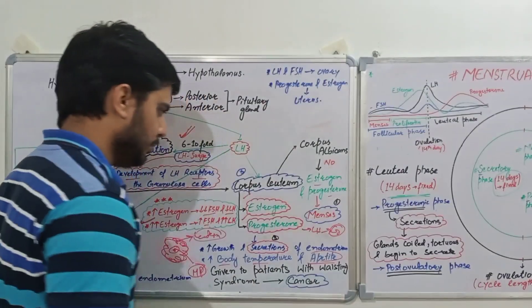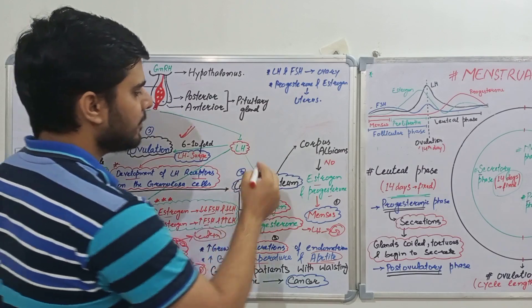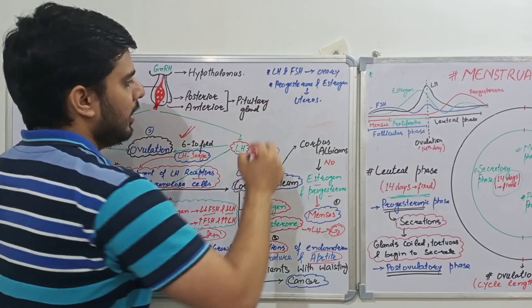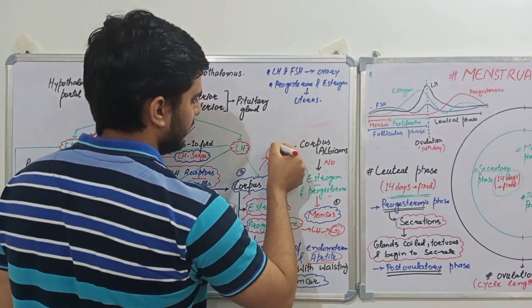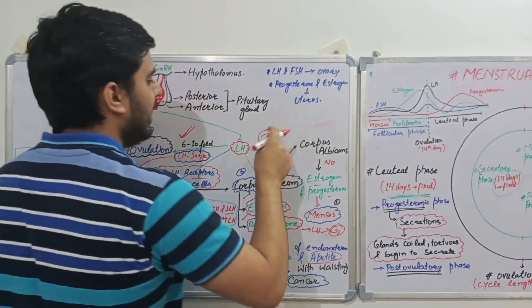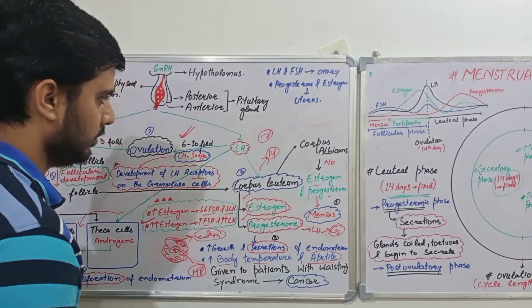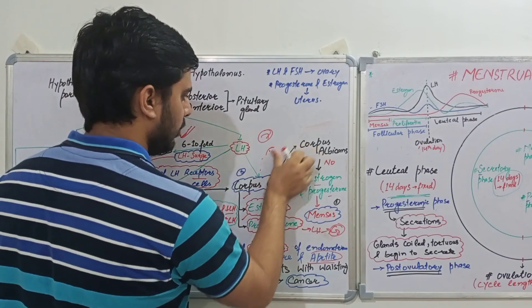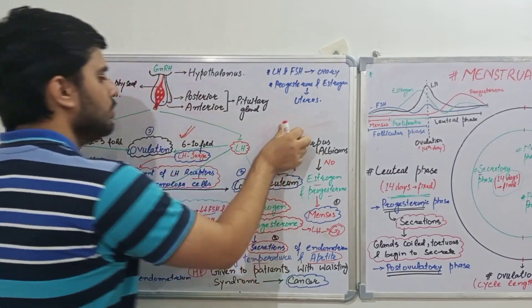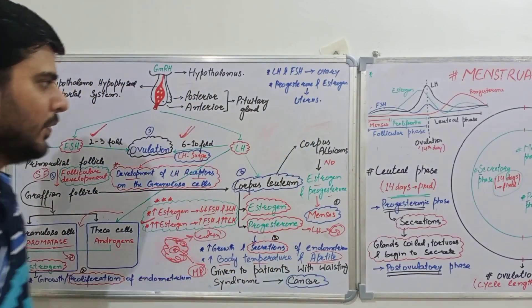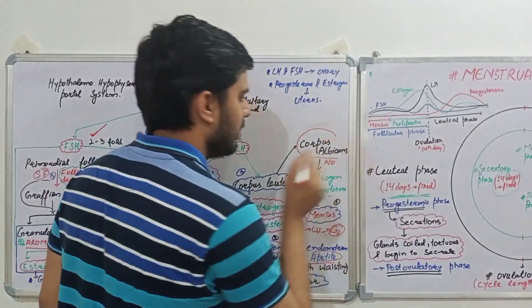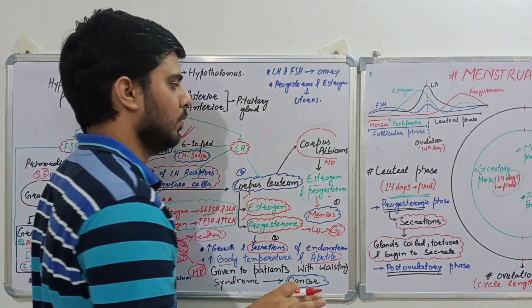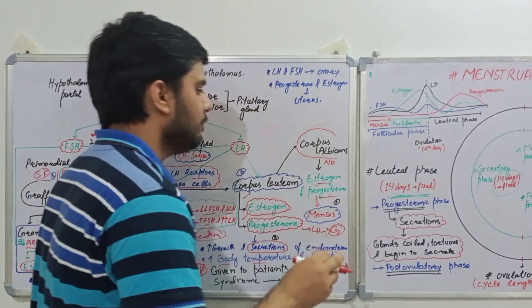After the formation of corpus luteum, its life is only 14 days. It will start to involute around the seventh day of the luteal phase — not the seventh day of the whole menstrual cycle. When it involutes, it converts into corpus albicans. Corpus albicans does not form any hormone — neither estrogen nor progesterone.